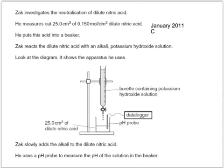A second question. Zach investigates the neutralisation of dilute nitric acid. He measures out 25 cubic centimetres of a 0.150 mole per cubic decimetre dilute nitric acid solution and puts that into the beaker. Zach reacts the dilute nitric acid with potassium hydroxide solution in the burette. There's a data logger connected to a pH probe, and Zach slowly adds the alkali to the dilute acid, and uses a pH probe to measure the pH of the solution in the beaker.